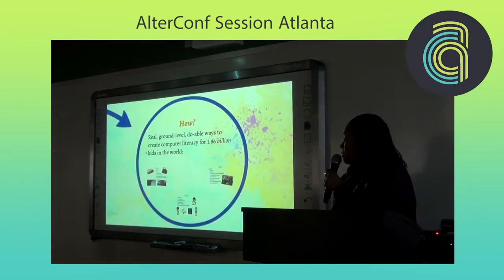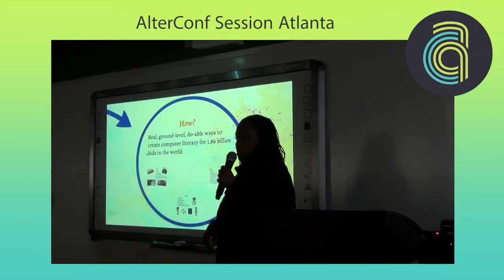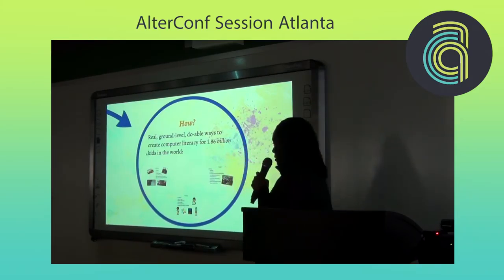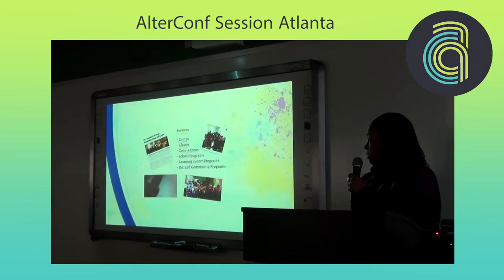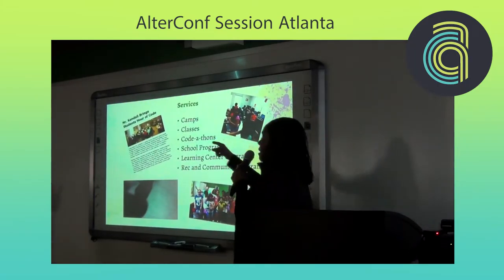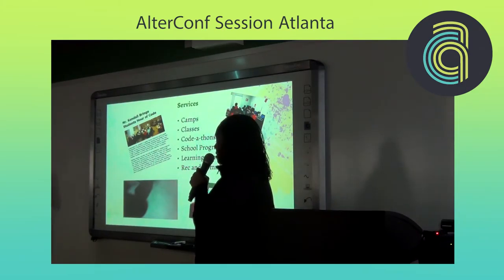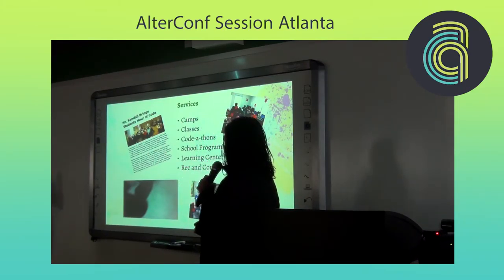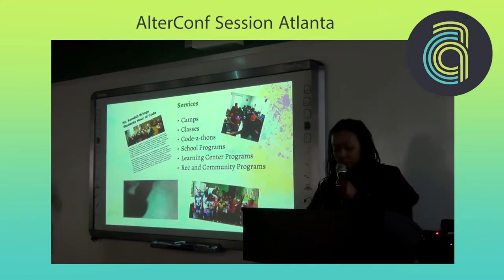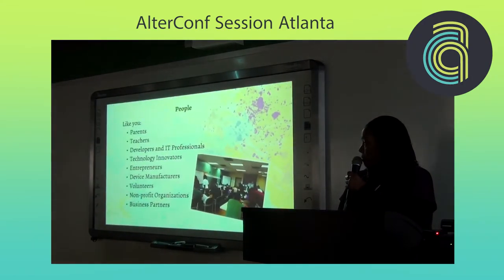So how do we do this? What are some real ground-level ways to create computer literacy for 1.86 billion kids around the world? The first way is through services — sponsoring an hour of code, camps, classes, code-a-thons, school programs, learning programs, and recreation center programs are places we can start to create computer literacy.